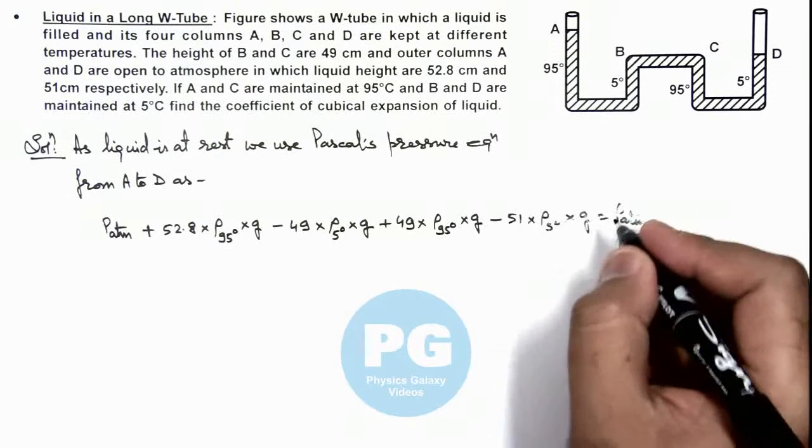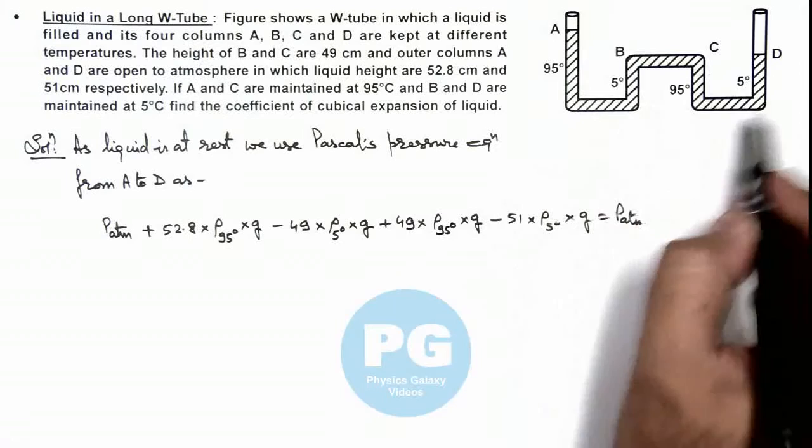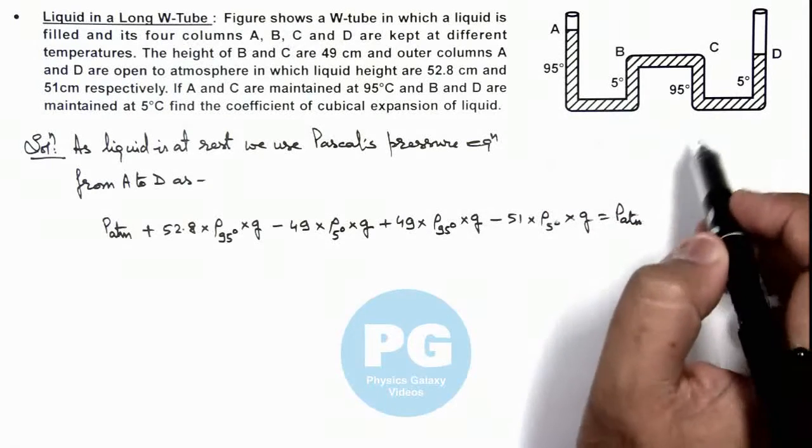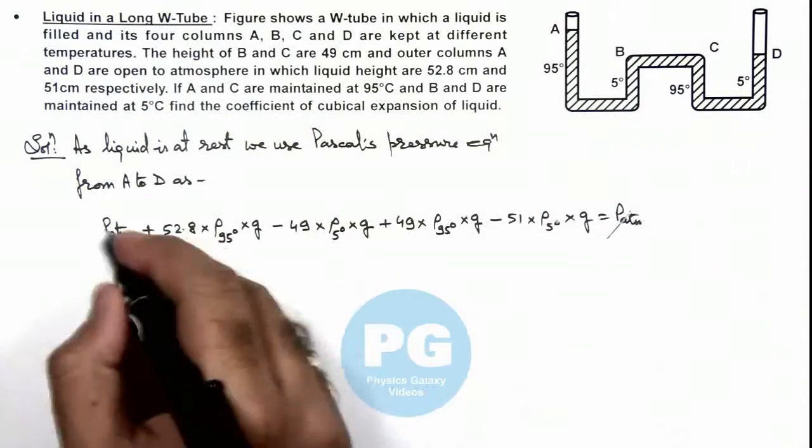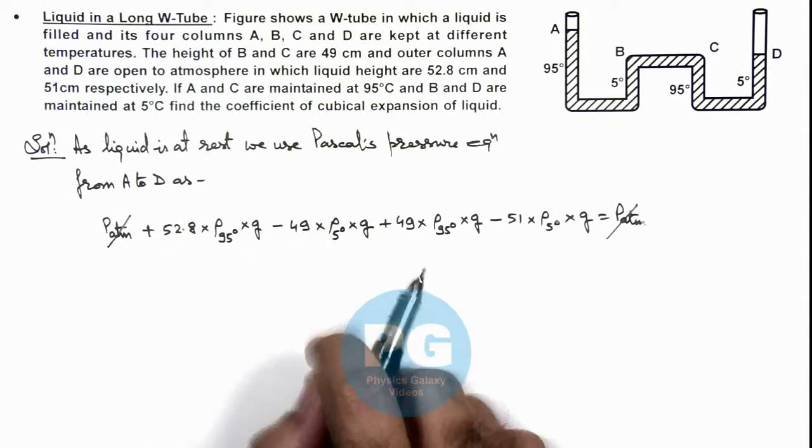So we have written the pressure equation from point A to D along the path where the liquid is filled. Here P atmosphere gets cancelled out and the value of g also gets cancelled out.